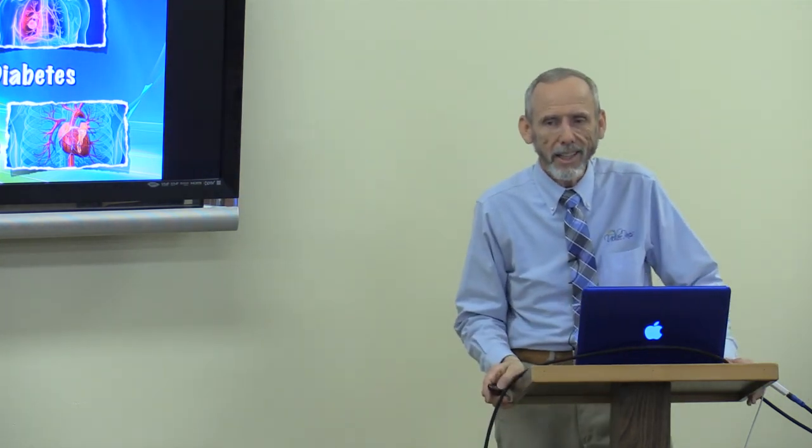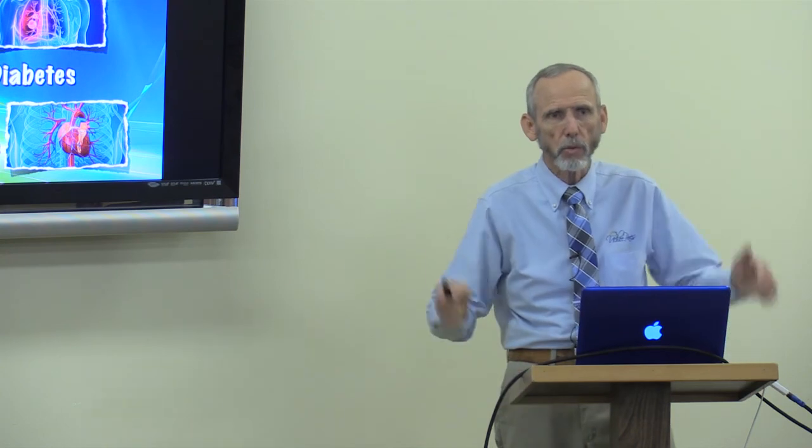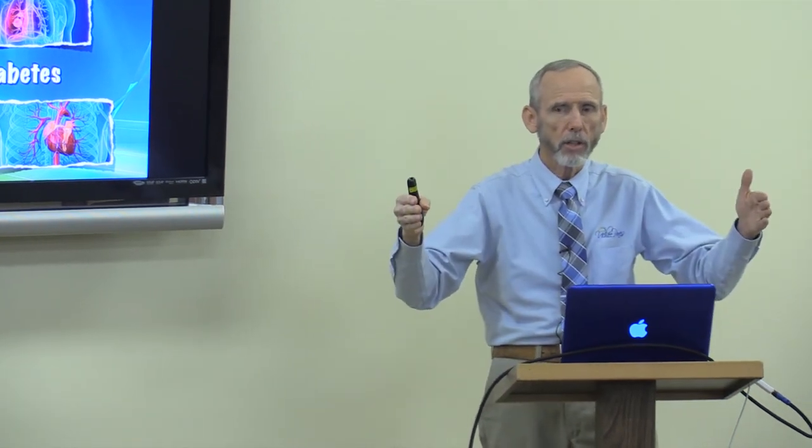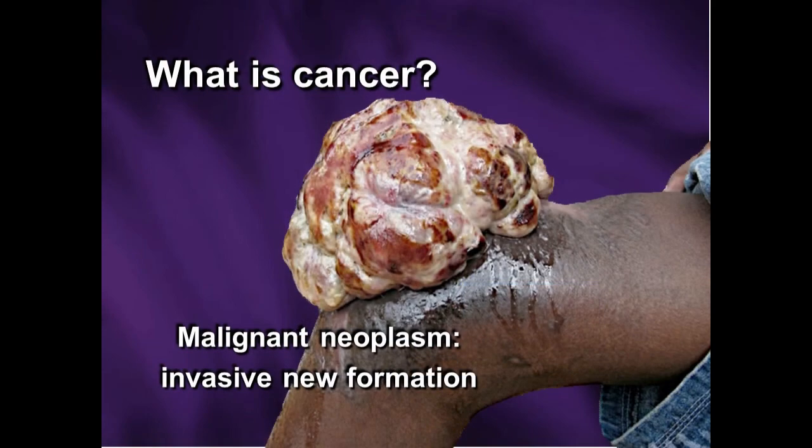Now, what is cancer? We defined what disease was in the last class — it was an effort in nature to free itself from conditions that result from a violation of the laws of health. Now let's look more specifically at what cancer is. It is a malignant neoplasm. Neoplasm means a new formation, a new growth.